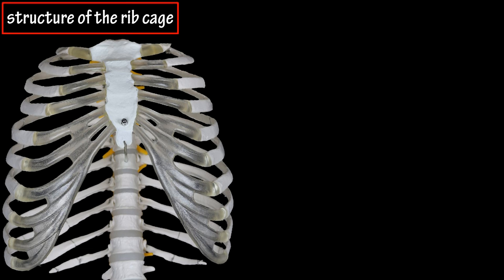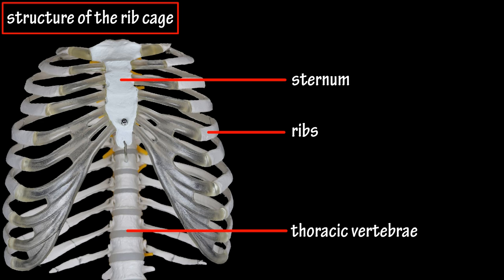The thoracic or rib cage is comprised of three main parts: the sternum, the ribs, and the thoracic vertebrae.